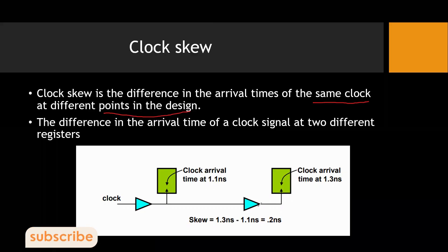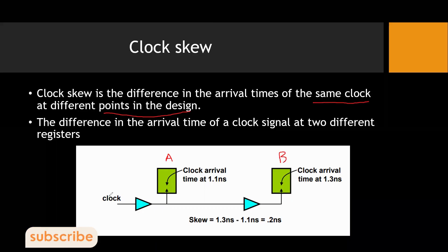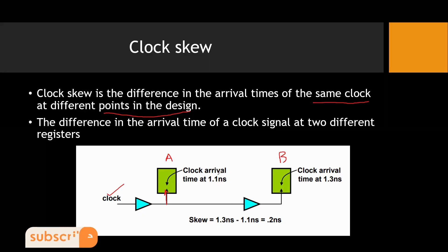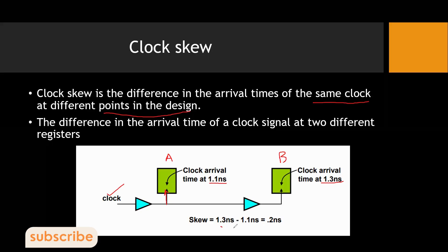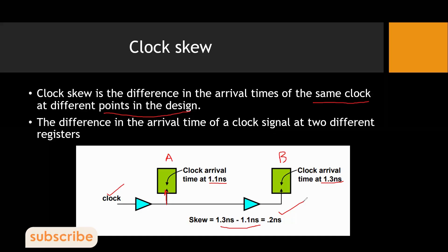Here is an example: suppose register A and register B are two registers sharing a common clock source. The clock arrives at register A at 1.1 nanoseconds, whereas at register B it arrives at 1.3 nanoseconds. So the skew is the difference in arrival time: 1.3 minus 1.1, which comes to 0.2 nanoseconds. This is the skew — the difference in the arrival time of the clock at different points in the design.